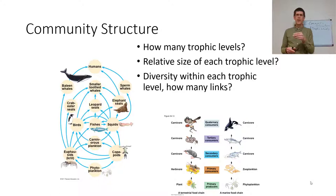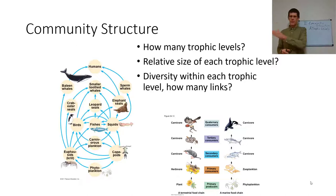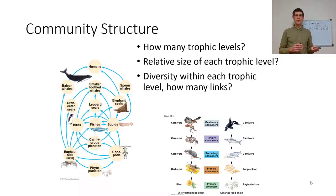We say food chain because we're looking at a single molecule passing through things — a single molecule of protein passing through a plant, herbivore, carnivore, carnivore, carnivore, going all the way up. That's a chain. But you get a food web when you're looking at diversity within trophic levels.